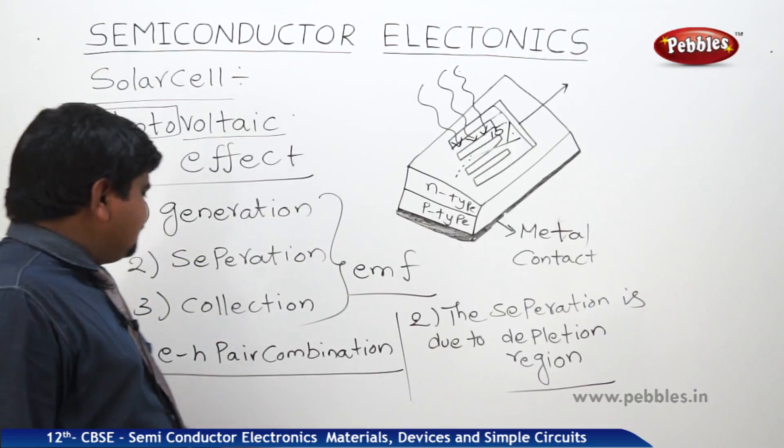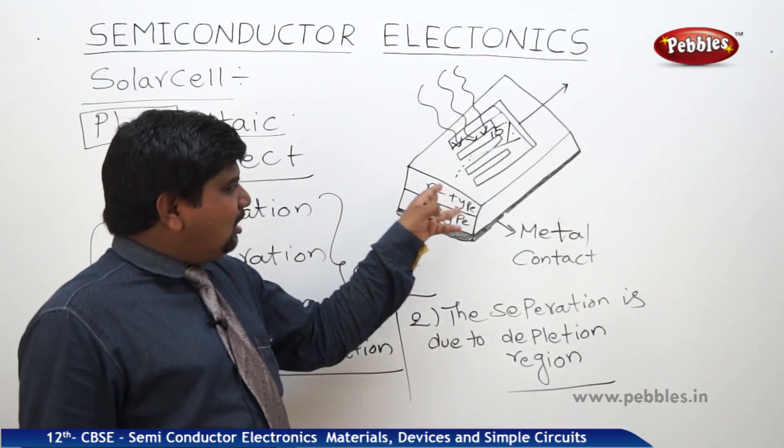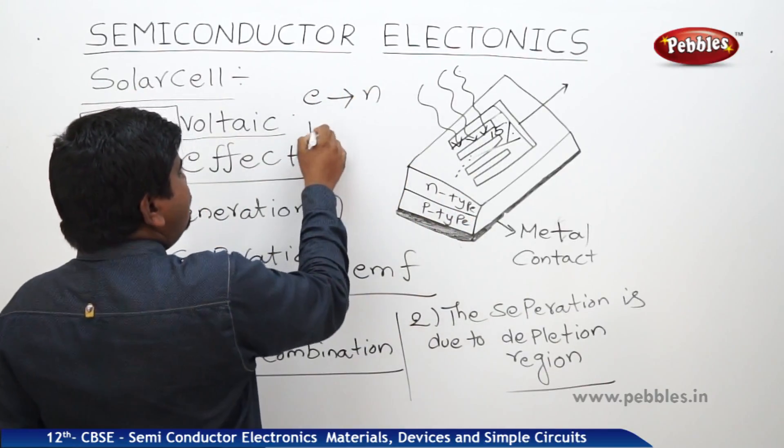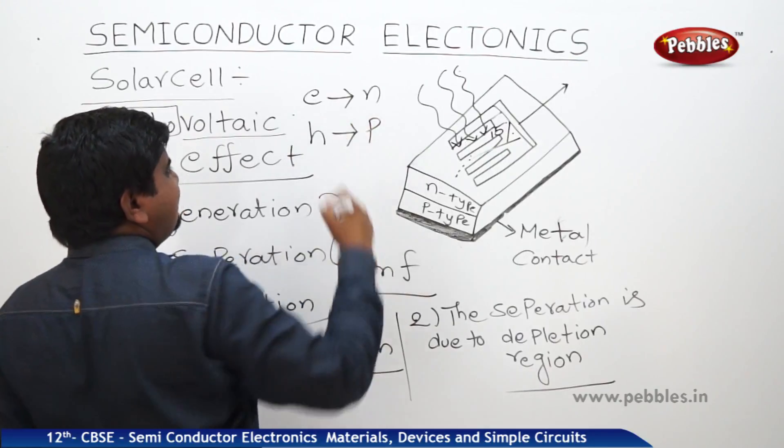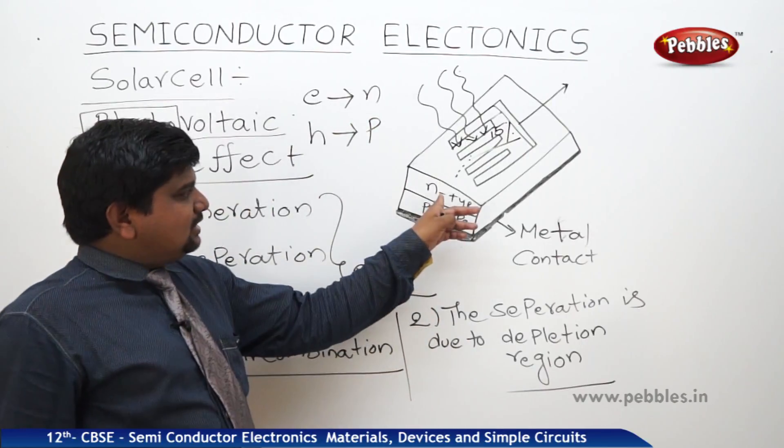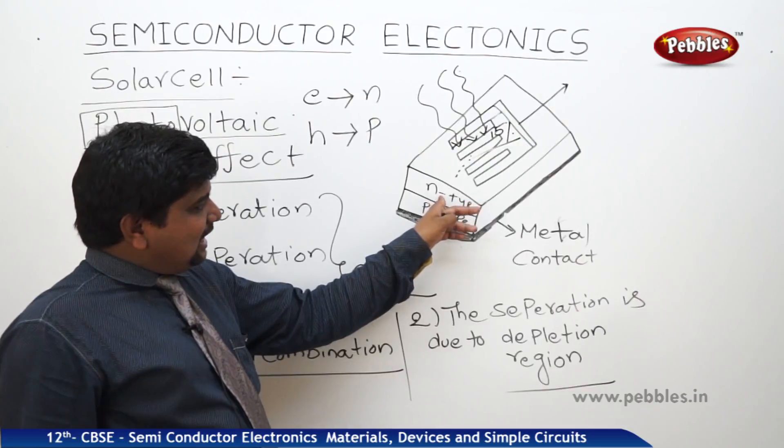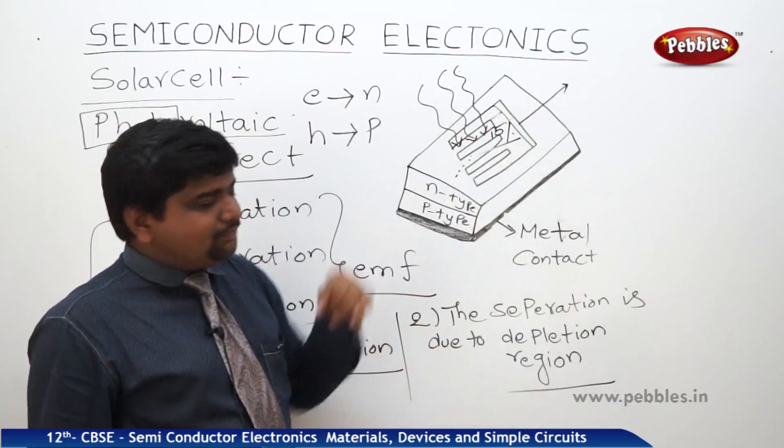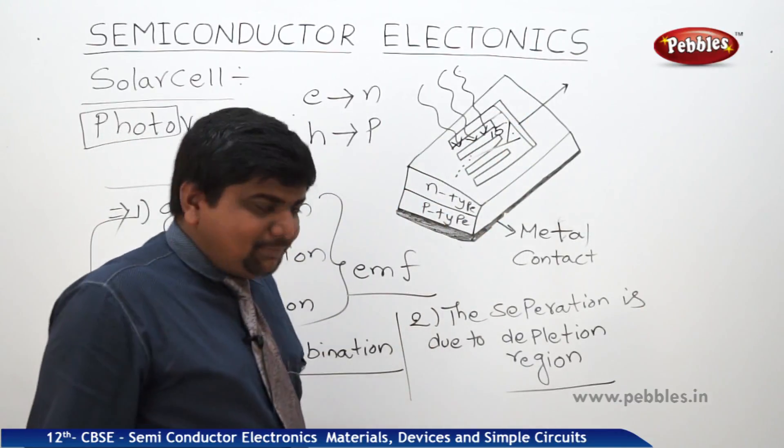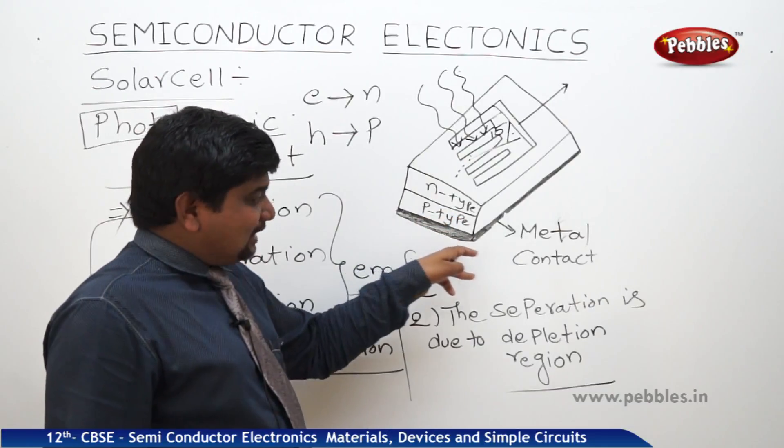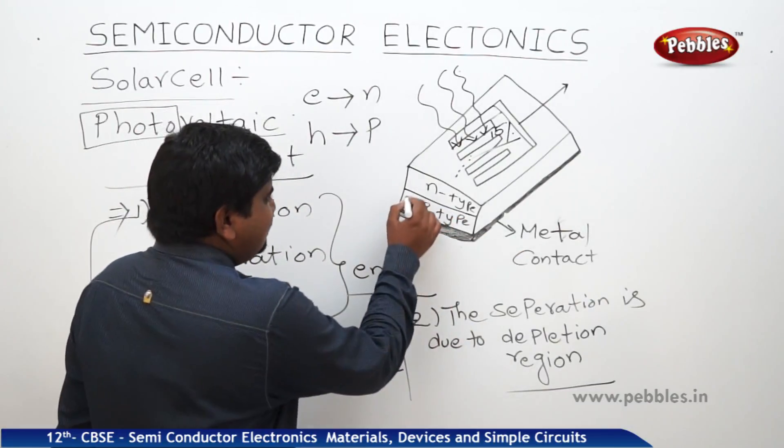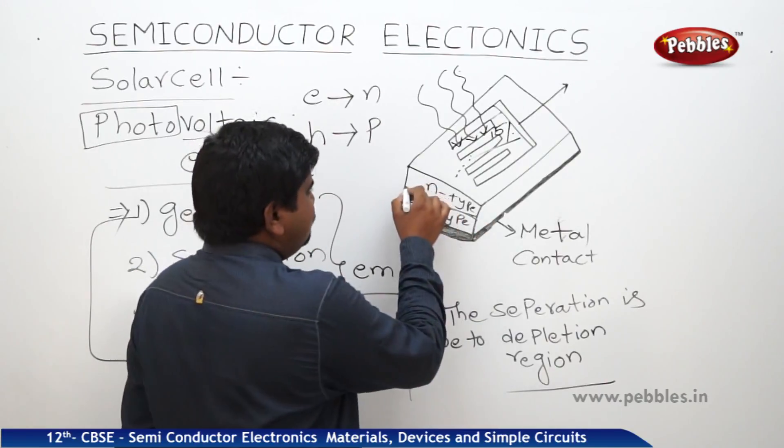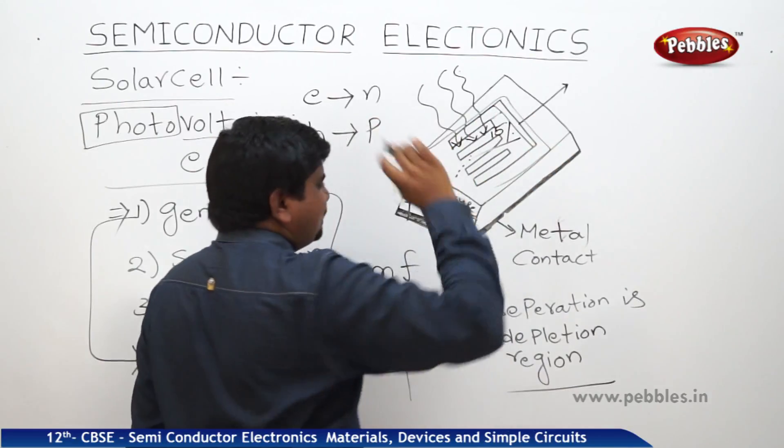The third one is collection. Because of the separation, all electrons will go to the n-type. All holes will go to the P-type semiconductors and the electrons which went back to the n-type, they are in contact with the metal plate and some EMF will be developed on the top. And the holes which went back to the P-type, the P-type is already with the metal contact. That's why this whole block will act as a positive electrode.